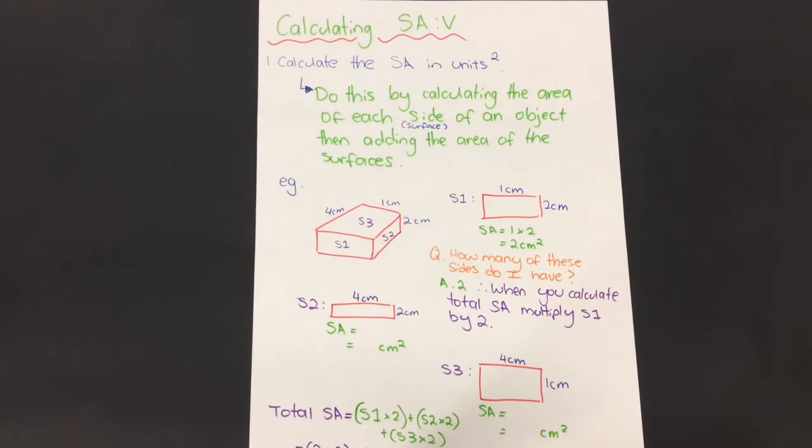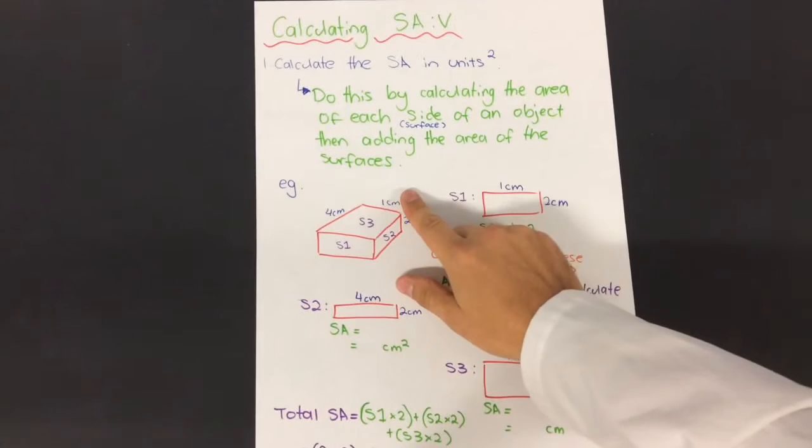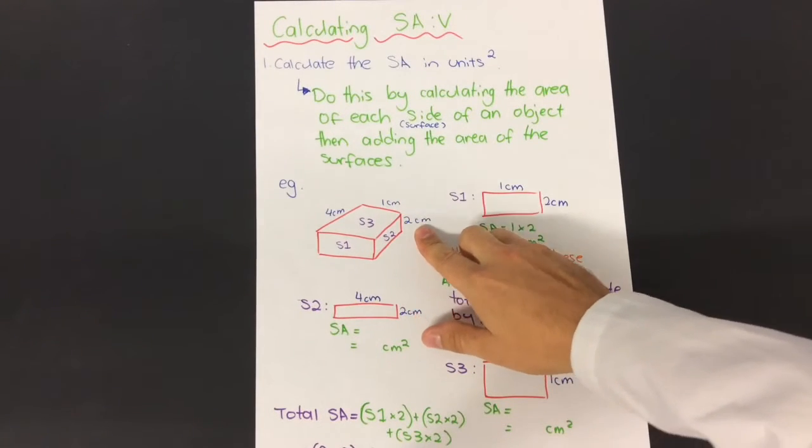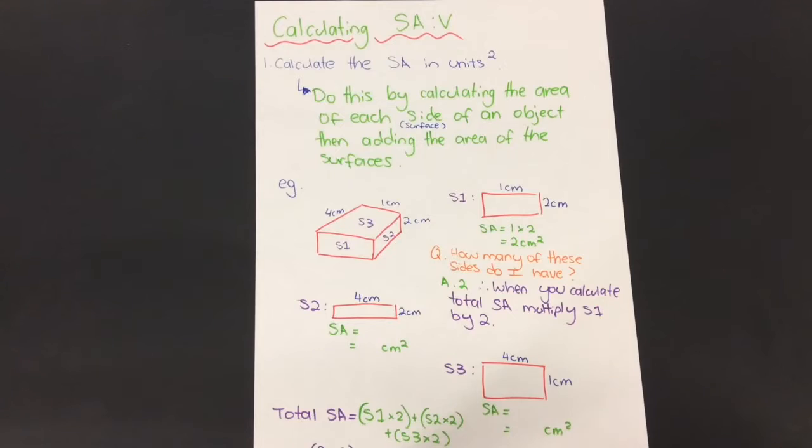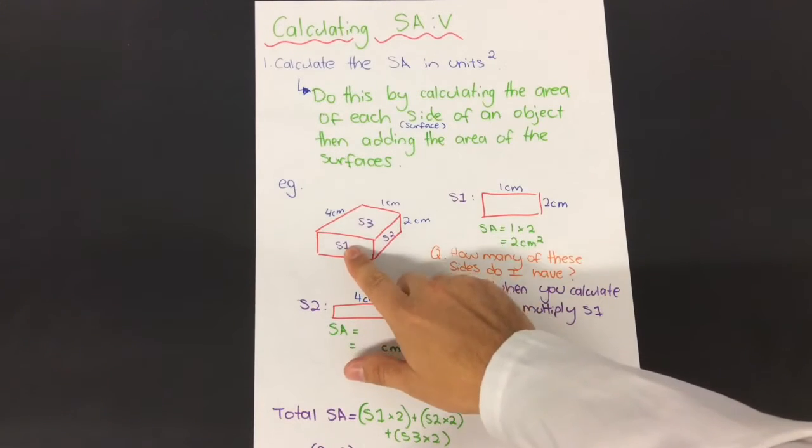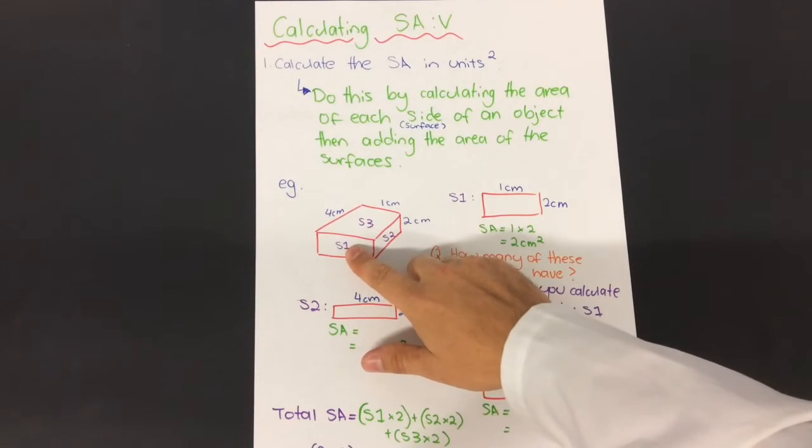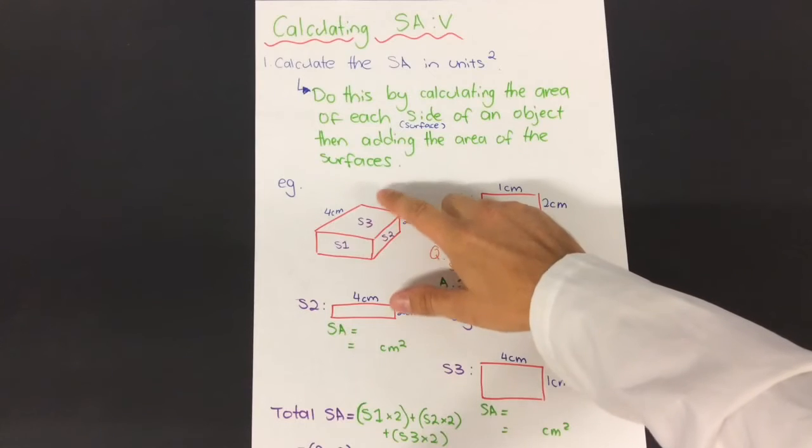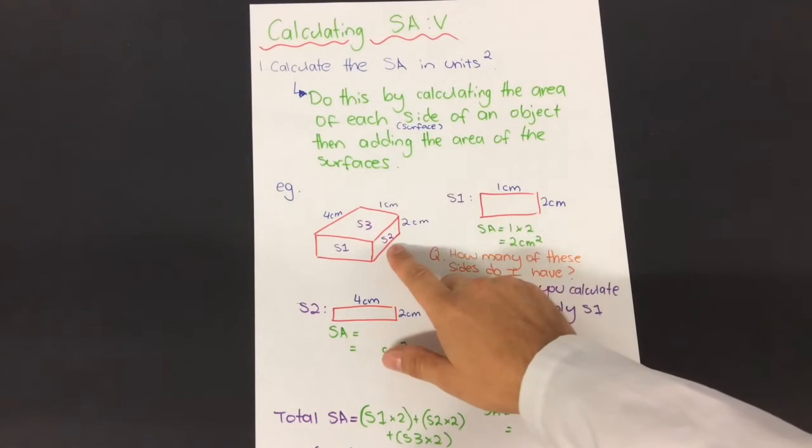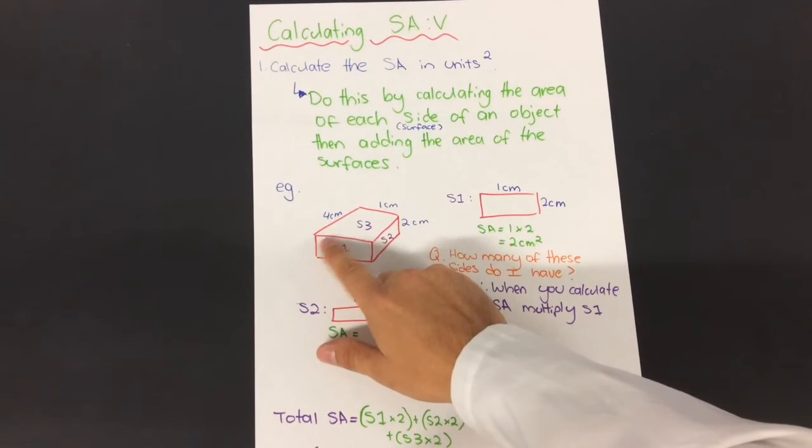Let's use this example I've got here. We've been given the dimensions of three sides: four centimeters, one centimeter, and two centimeters. I look at that object and I see that there are three identical sides. So surface one, if I was to break it up, would be mirrored on this side over here.